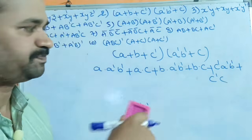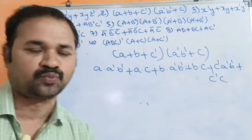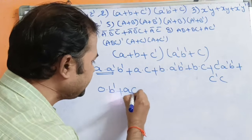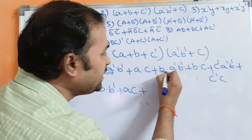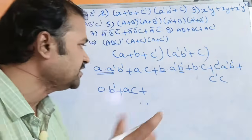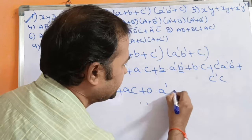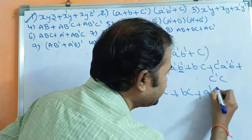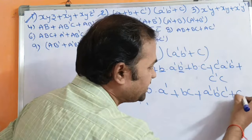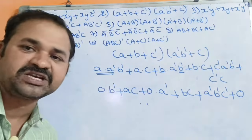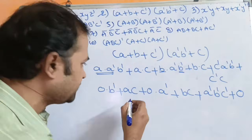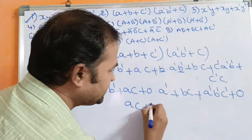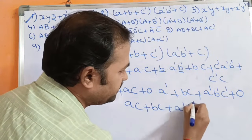Applying the complement law: a·a' = 0, so 0·b' + ac. Also b·b' = 0, so 0·a' + bc. And c'·c = 0. Using the null law, 0 into anything equals 0, so we are left with ac + bc + a'b'c'.